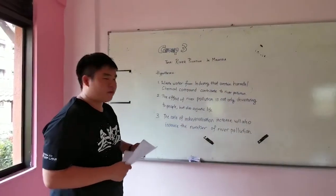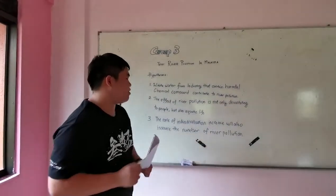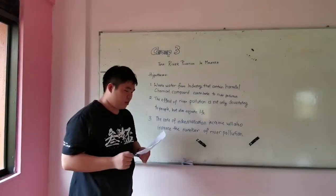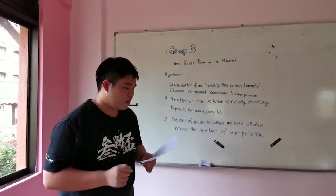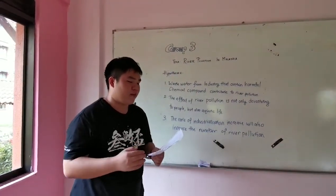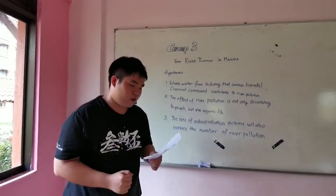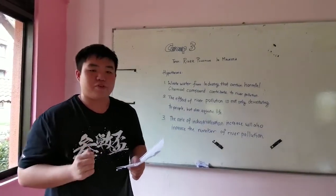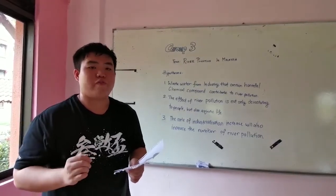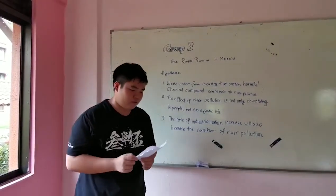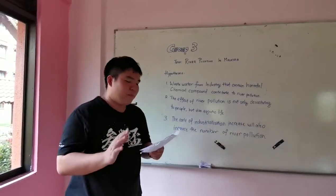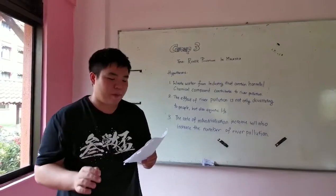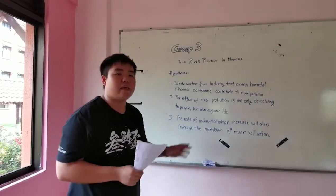Proceeding to our third null hypothesis, which is: the rate of industrialization increase will also increase the number of river pollutions. Based on the data we analyzed, we managed to get the p-value of 0.217, which exceeds the significance level that we set before, which was 0.05. Therefore, we fail to reject the null hypothesis. This indicates that the public agrees that the intensity of river pollution increases with the stepping up of industrialization in Malaysia.